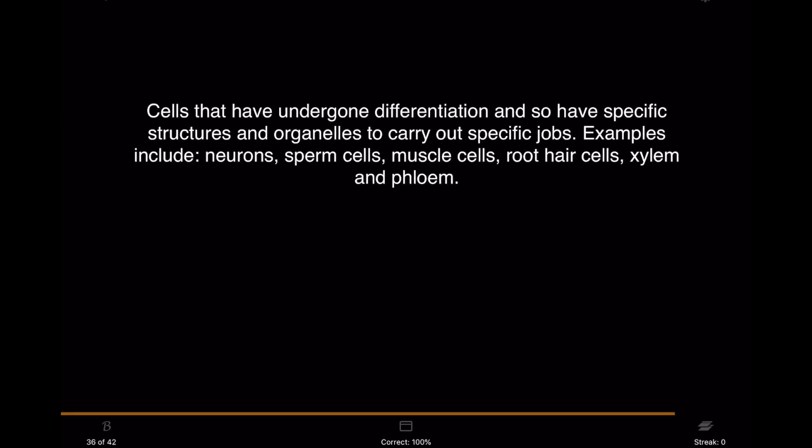Cells that have undergone differentiation and so have specific structures and organelles to carry out specific jobs. Examples include neurons, sperm cells, muscle cells, root hair cells, xylem and phloem. They are specialized cells.